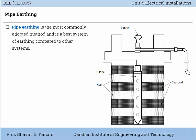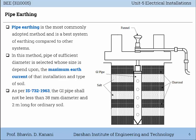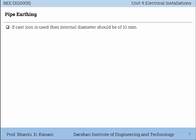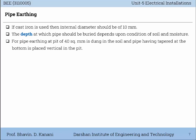You can also visualize this pipe Earthing from the figure. In this method, a pipe of sufficient diameter is selected whose size depends upon the maximum earth current of that installation and the type of soil. As per Indian Standard 732-1963, the GI pipe shall not be less than 30mm diameter and 2m long for ordinary soil. If cast iron is used, then the internal diameter should be 10mm. The depth at which the pipe should be buried depends upon the condition of soil and moisture. For pipe Earthing, a pit of 40mm is dug in the soil and a pipe tapered at the bottom is placed vertically in the pit.